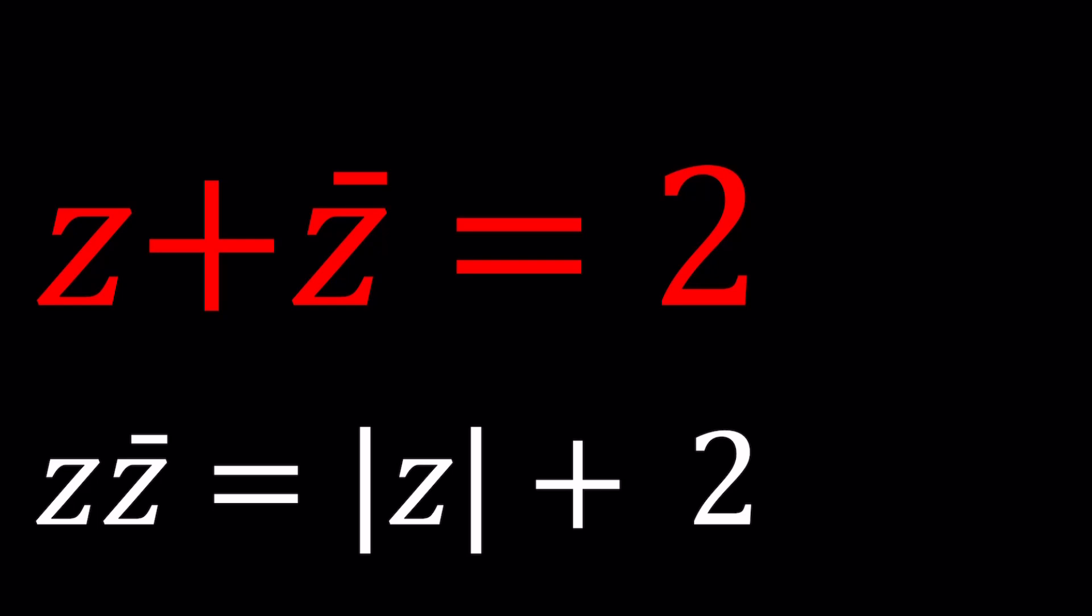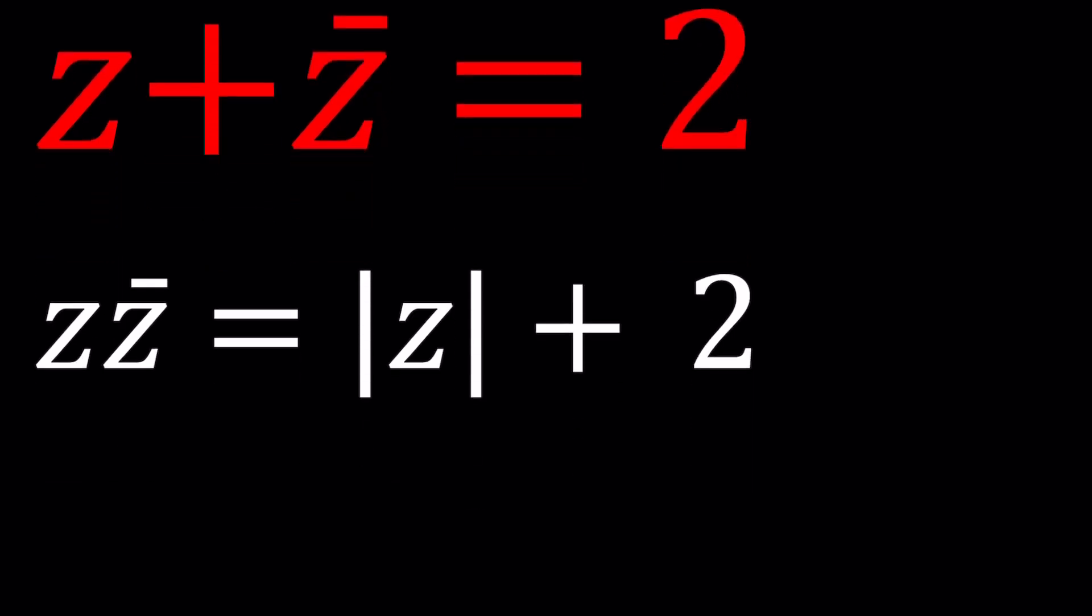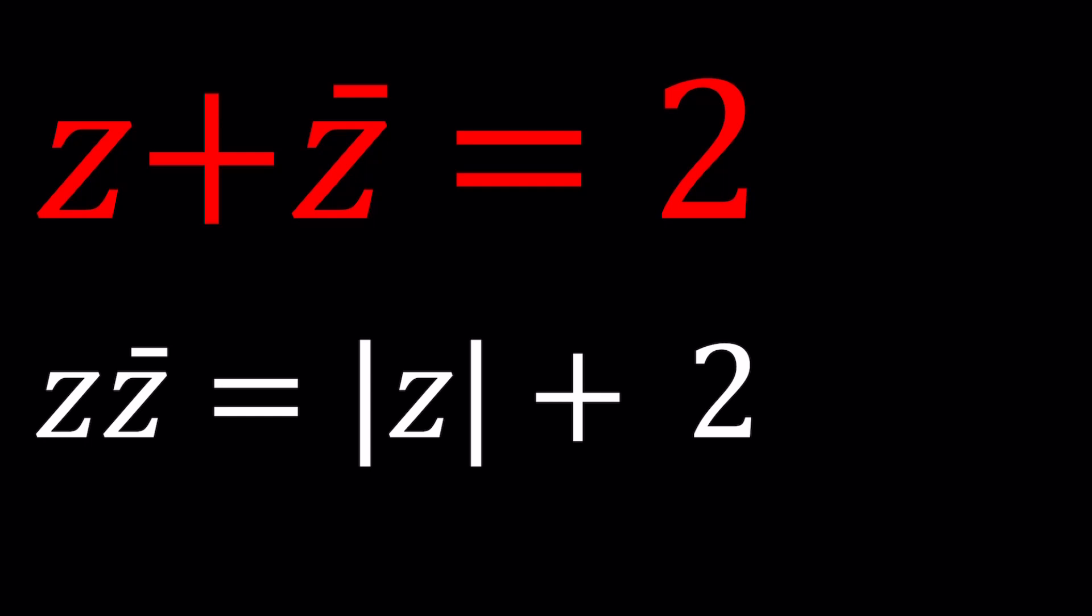Also remember that the absolute value of the conjugate and the original number are always the same. So let's go ahead and see how we can handle this system.